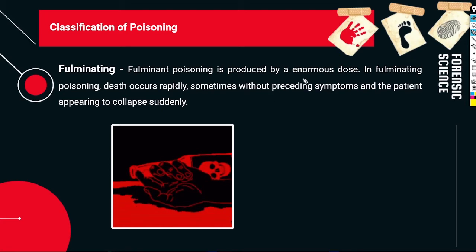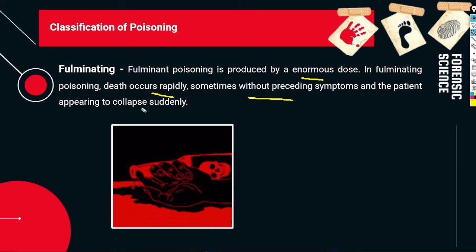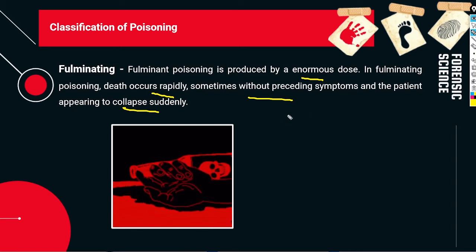Fulminating poisoning is produced by enormous doses. In fulminating poisoning, death occurs rapidly, sometimes without any preceding symptoms. The patient appears to collapse suddenly — there are no warning signs, and the person simply collapses and dies.